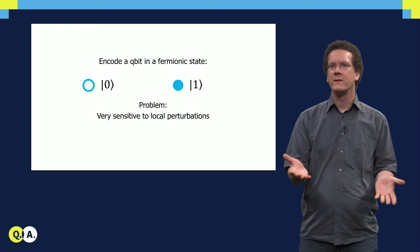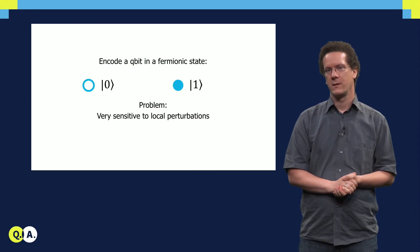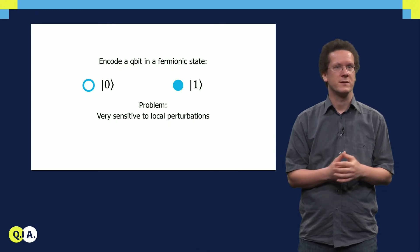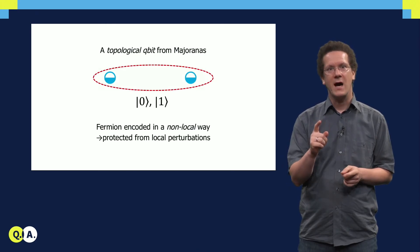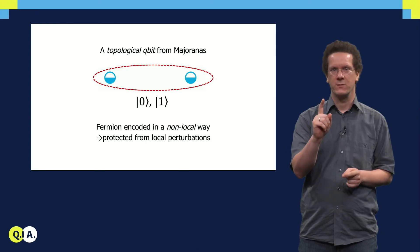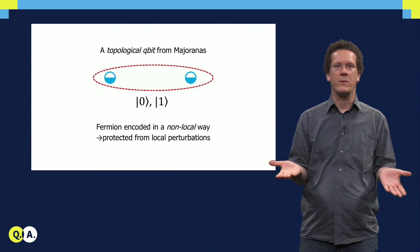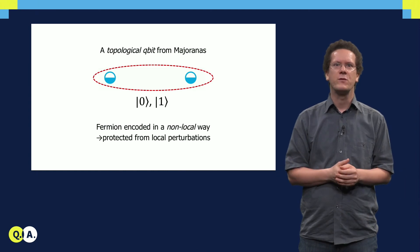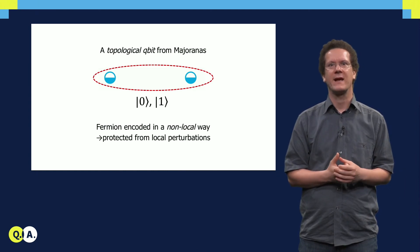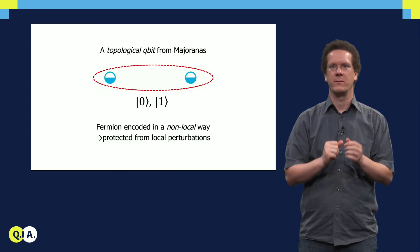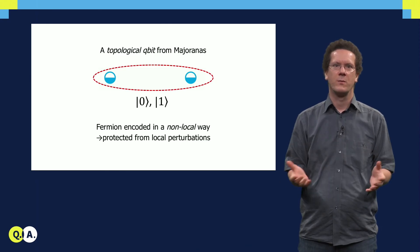The problem is that these are usually very sensitive to local perturbations. But now Majoranas come to the rescue. As I just told you, two Majoranas correspond to one fermion. But if I have two spatially separated Majoranas, I can encode one fermionic degree of freedom in a very non-local way, protected from any local perturbation. This is our topological qubit.